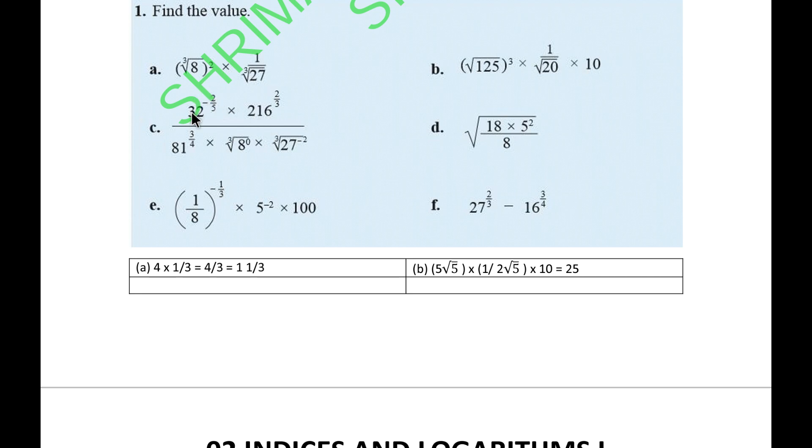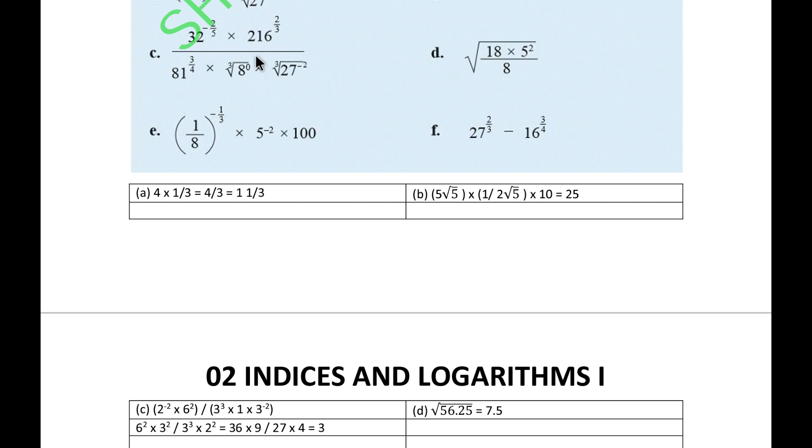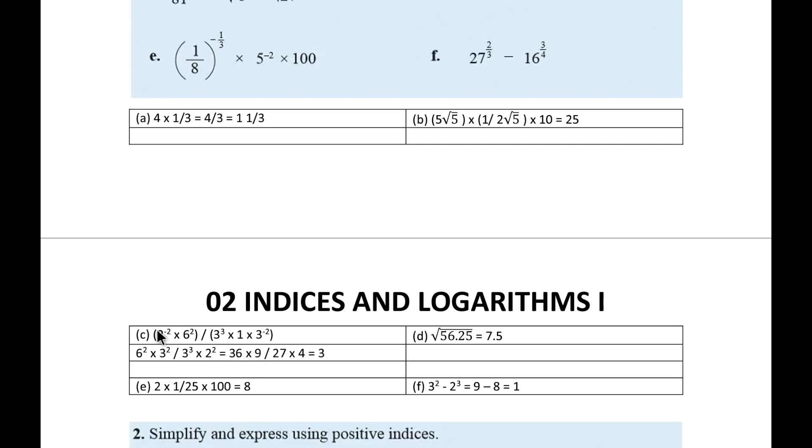Now see, 32 to the power 5 and 5 and 5 cancel, it gets 2 to the power minus 2. Here 216, 6 to the power 3, 3 and 3 cancel, it comes 6 to the power 2. Here 3 to the power 4, 4 and 4 cancel, it remains 3 to the power 3. The middle one is just 1. 3 to the power 3 into minus 2 gives 3 to the power minus 6, again minus 2 is 3 to the power minus 2. You need to cancel these two, so you can take this one down and the negative indices up. It comes up 3 to the power 2, 6 to the power 2, divide by 3 to the power 3 and 2 to the power minus 2 going down. The answer is 3.